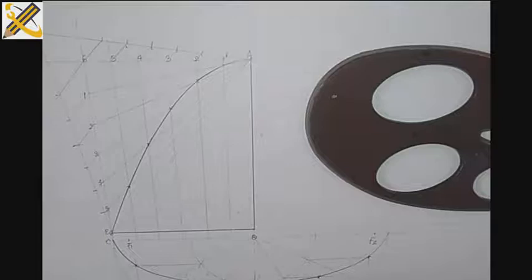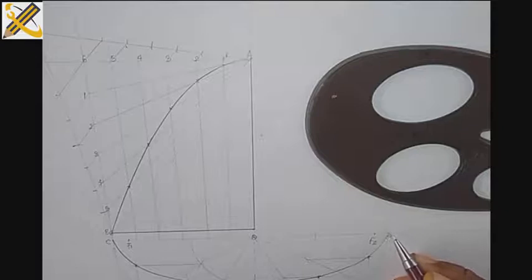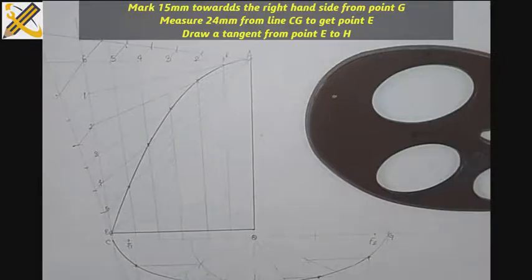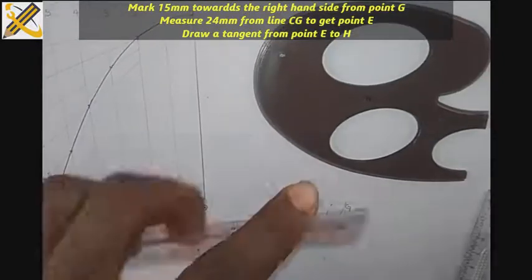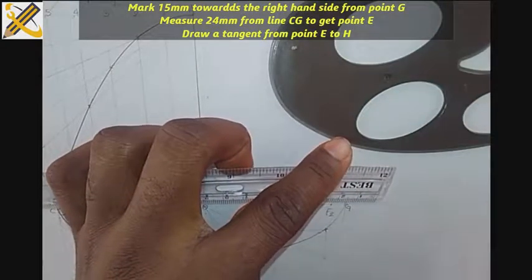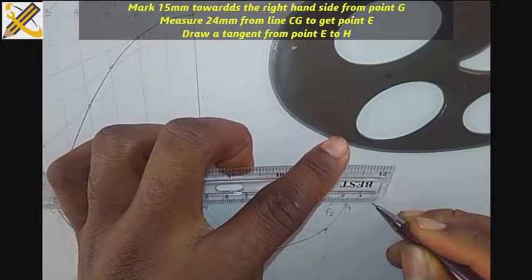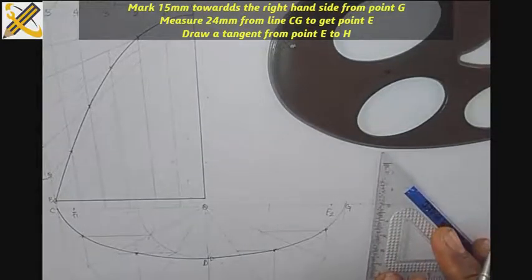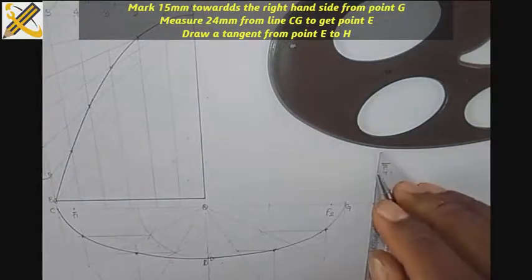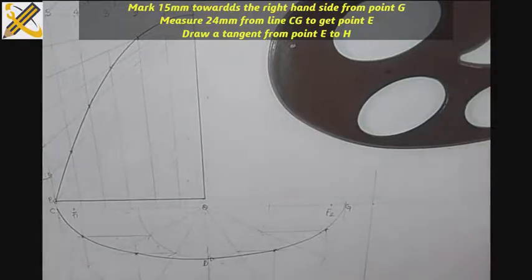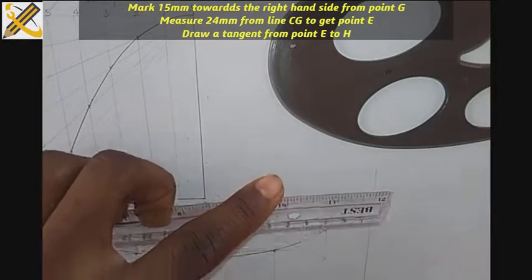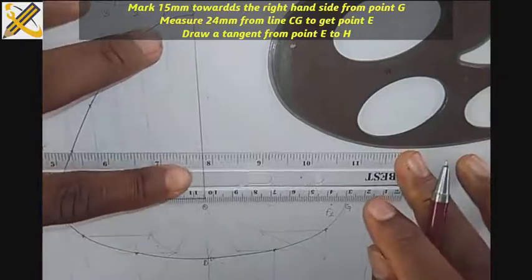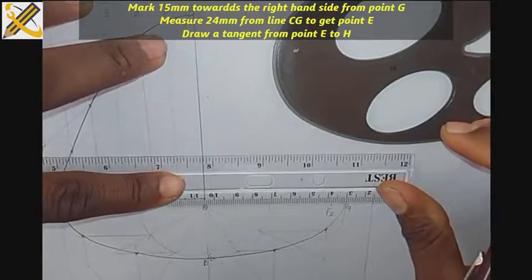The next thing is from point G, which is this junction here. The distance there is 15 towards my right hand side, so I'm going to do that now. This is the mark of 15. And I'm going to draw a projection line on that side. Having drawn the projection line.